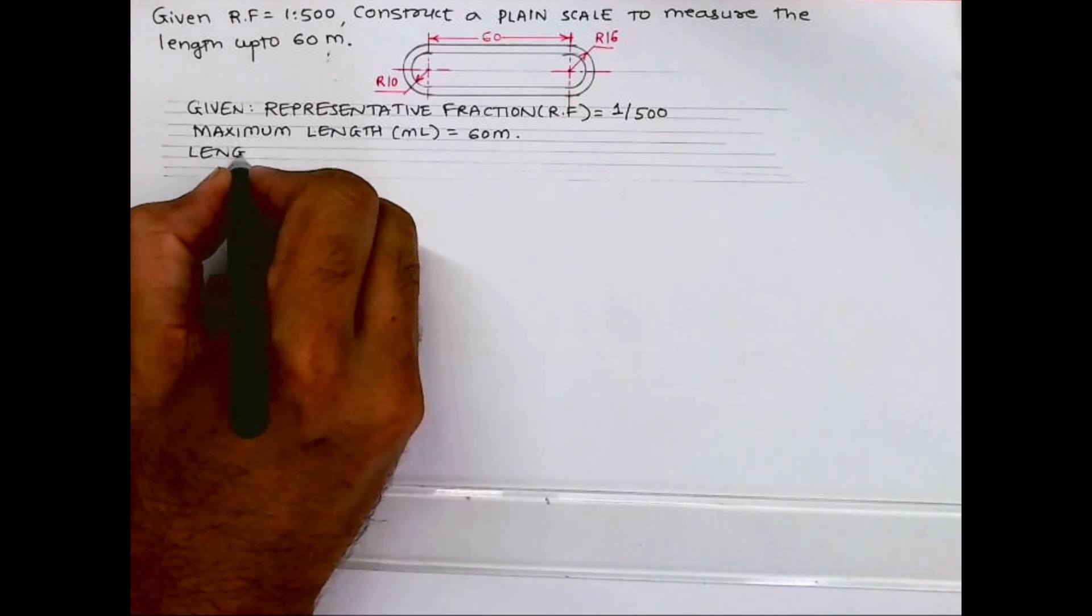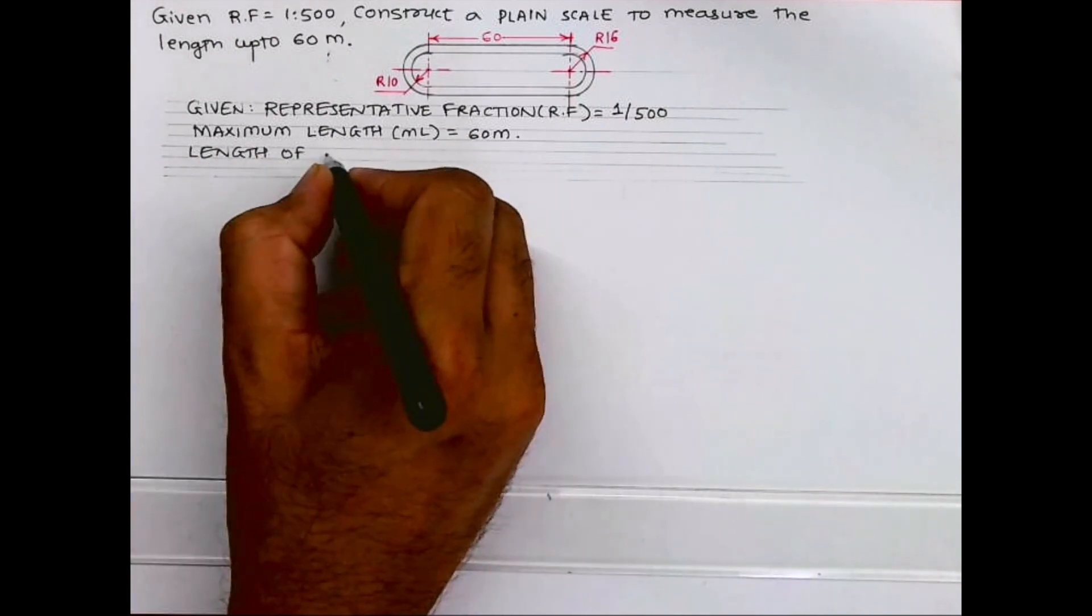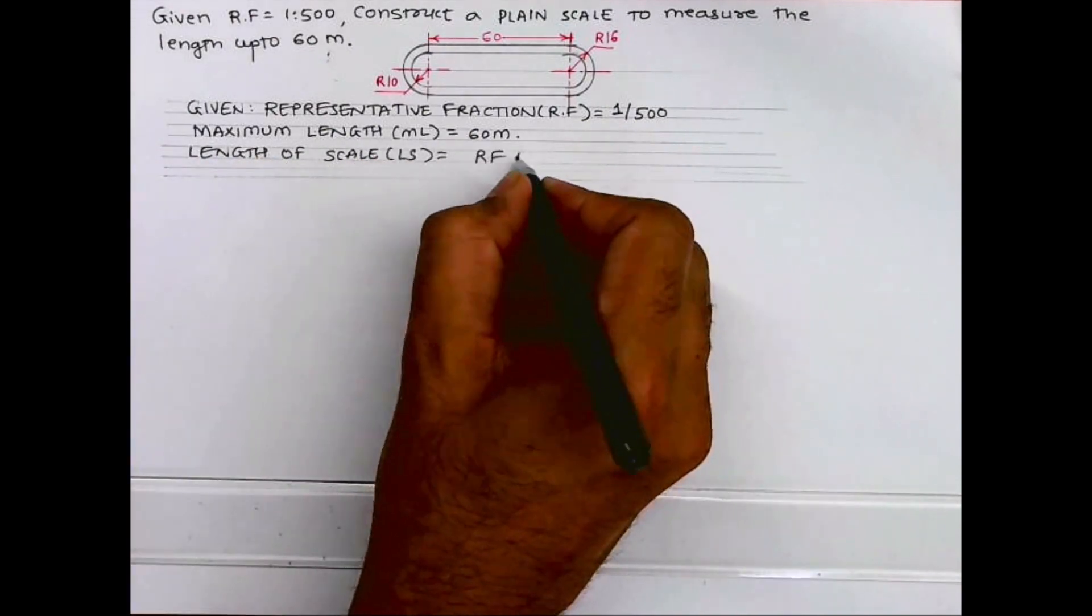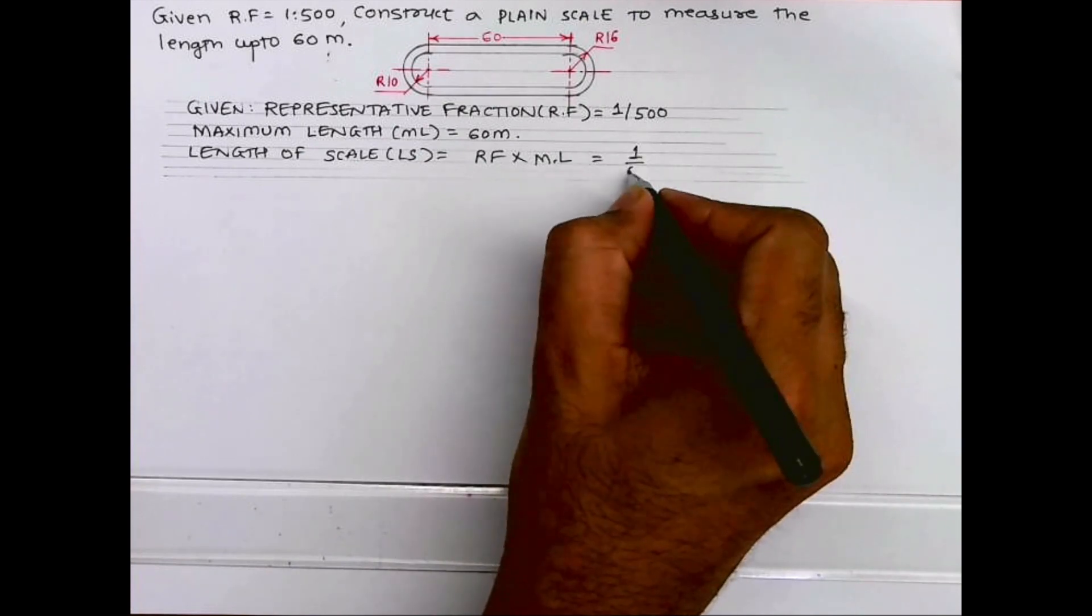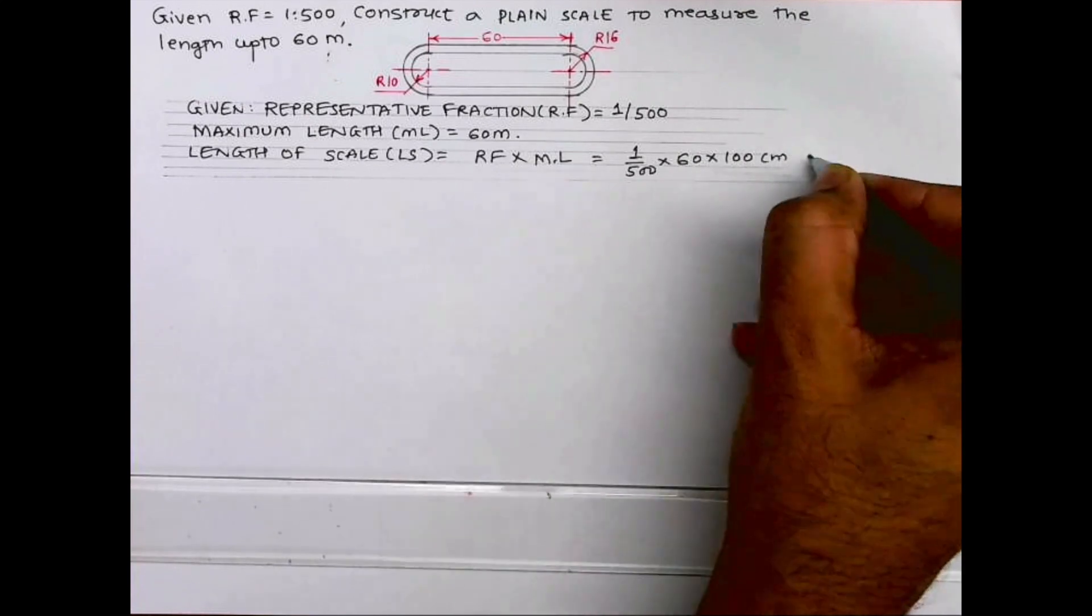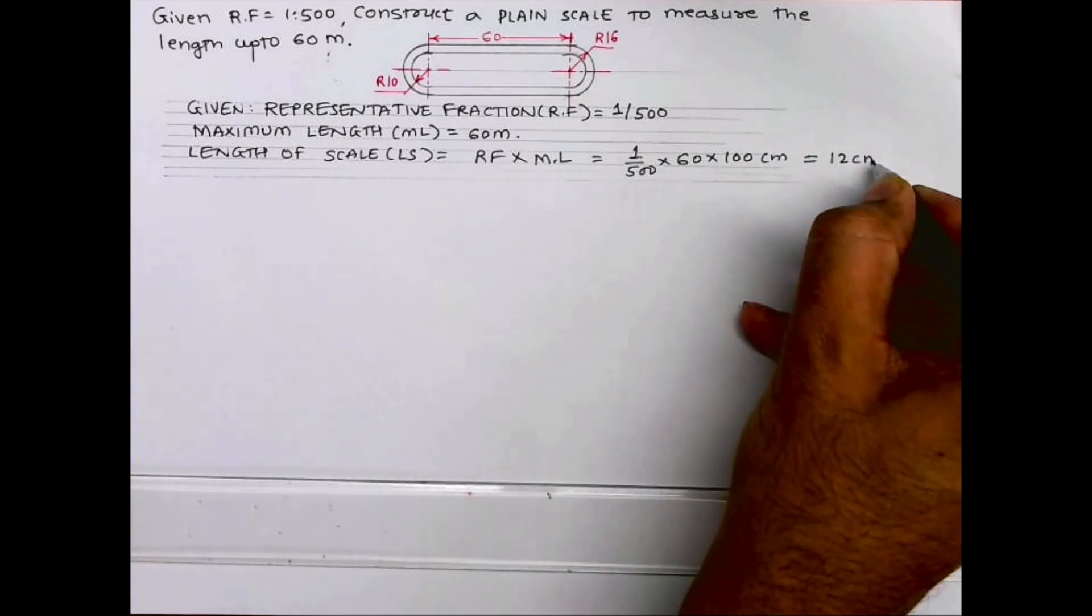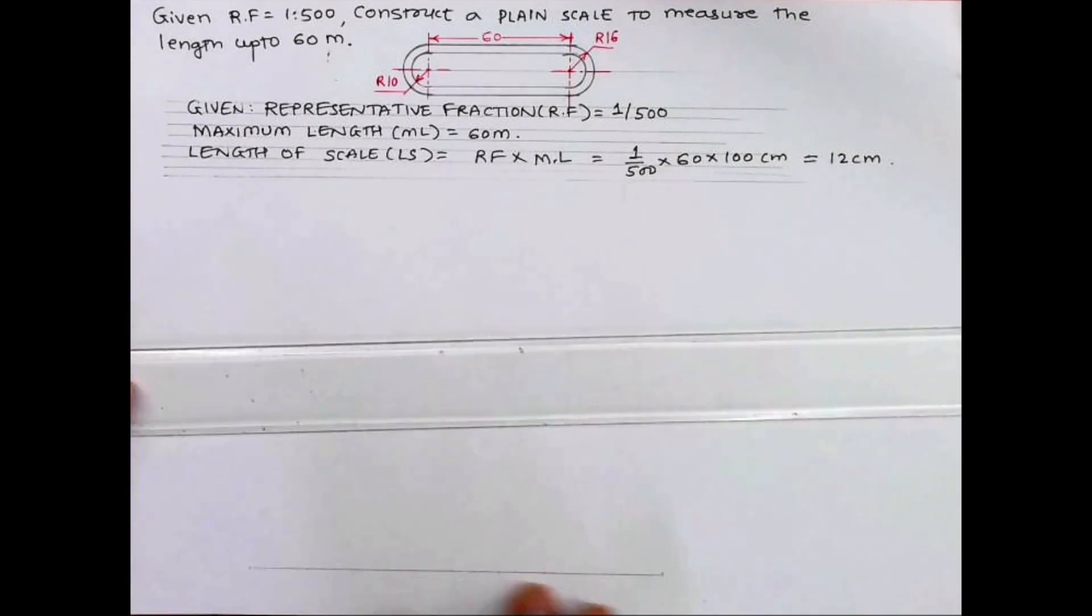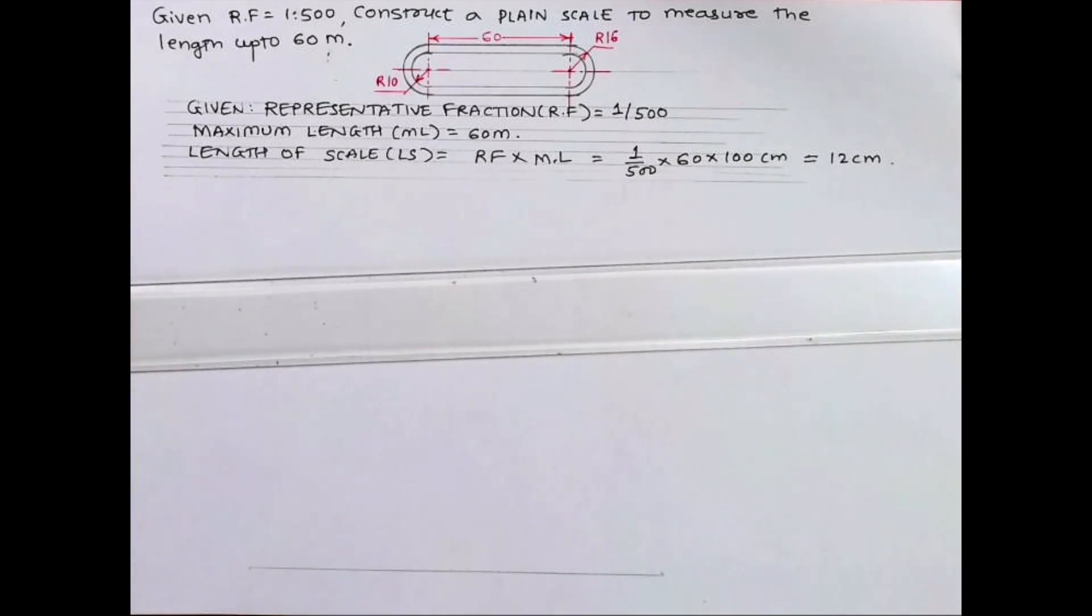We know the formula: length of scale equals RF times ML. So RF is 1 upon 500 times 60 times 100, which will be 12 centimeters. First, I will draw a 12 centimeter long line.